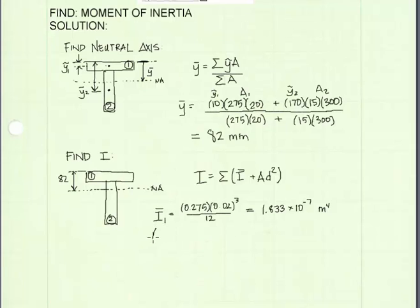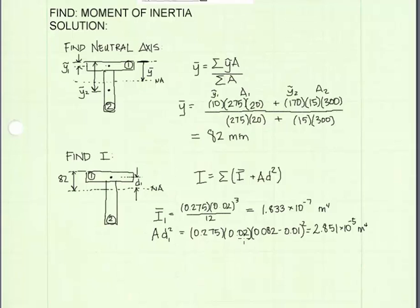Now calculating A·d² for piece 1. The area is 0.275 m × 0.02 m. The distance d1 is from the neutral axis up to the centroid of piece 1, equal to 82 mm minus half the thickness of piece 1: 0.082 m − 0.01 m = 0.072 m. Squaring that gives the value for A·d² for piece 1.